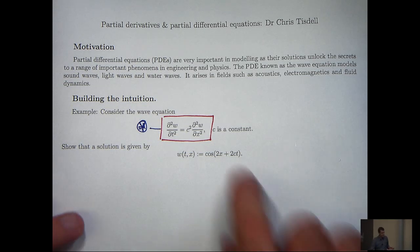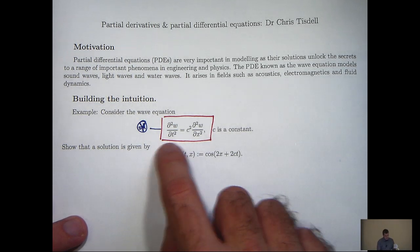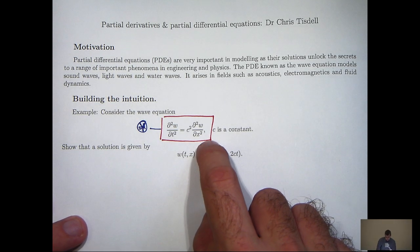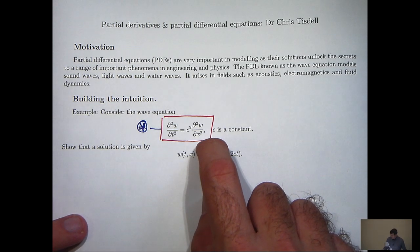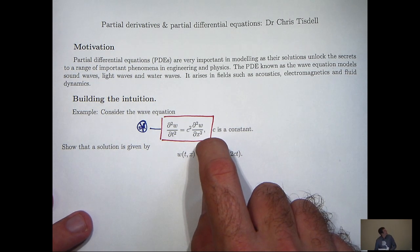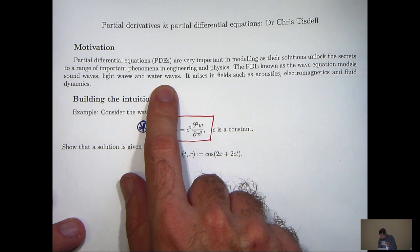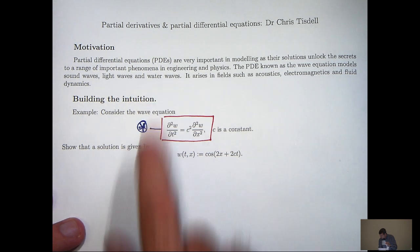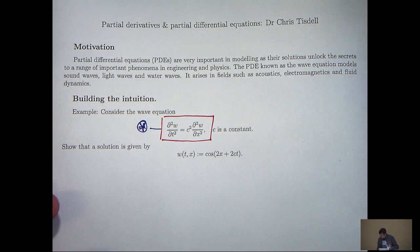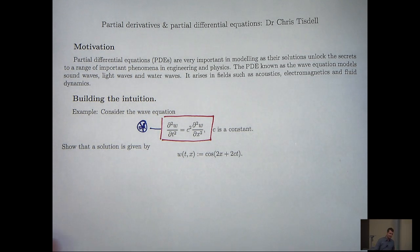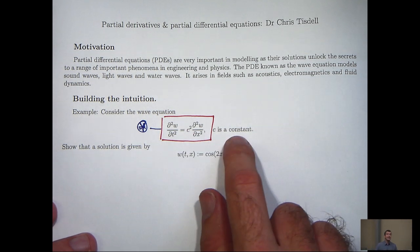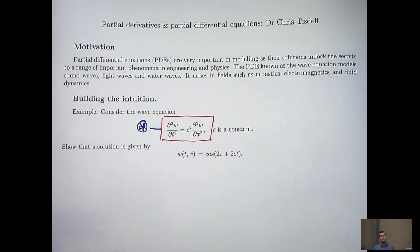This particular partial differential equation, or PDE, is known as the wave equation. The wave equation models sound waves, light waves, and water waves, and it arises in accompanying fields like acoustics, electromagnetics, and fluid dynamics. The C here is just a constant related to the wave speed.